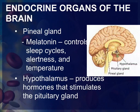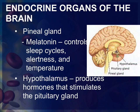There are three endocrine glands in the brain. The first is the pineal gland, which is located just posterior to the thalamus. The hormone that the pineal gland produces is melatonin, and it controls your sleep cycle, wakefulness, alertness, and temperature.